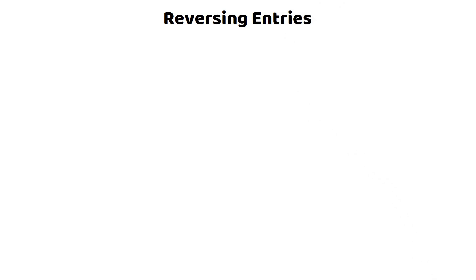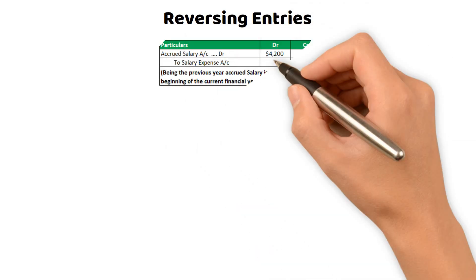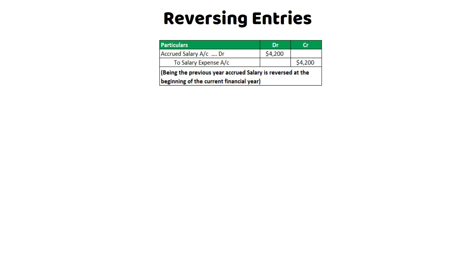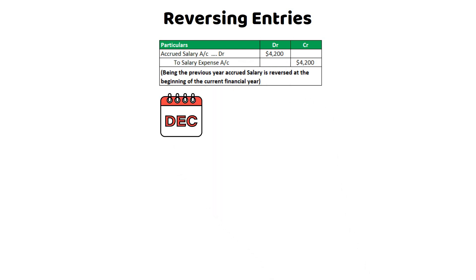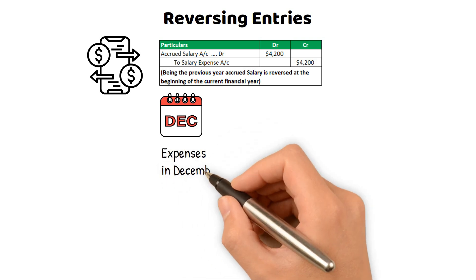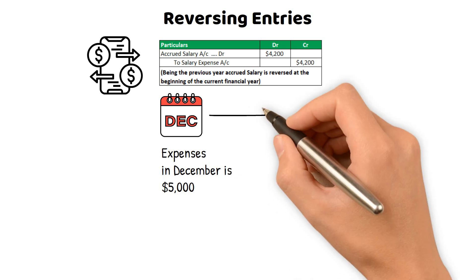Reversing entries are those made at the beginning of a new accounting period to reverse specific adjusting entries made in the previous period. Adjusting entries are made at the end of an accounting period to ensure the financial statements are accurate and complete. However, these adjustments may reflect something other than actual cash transactions during the next period. For example, a company may accrue expenses at the end of one period but pay for those expenses in the following period.